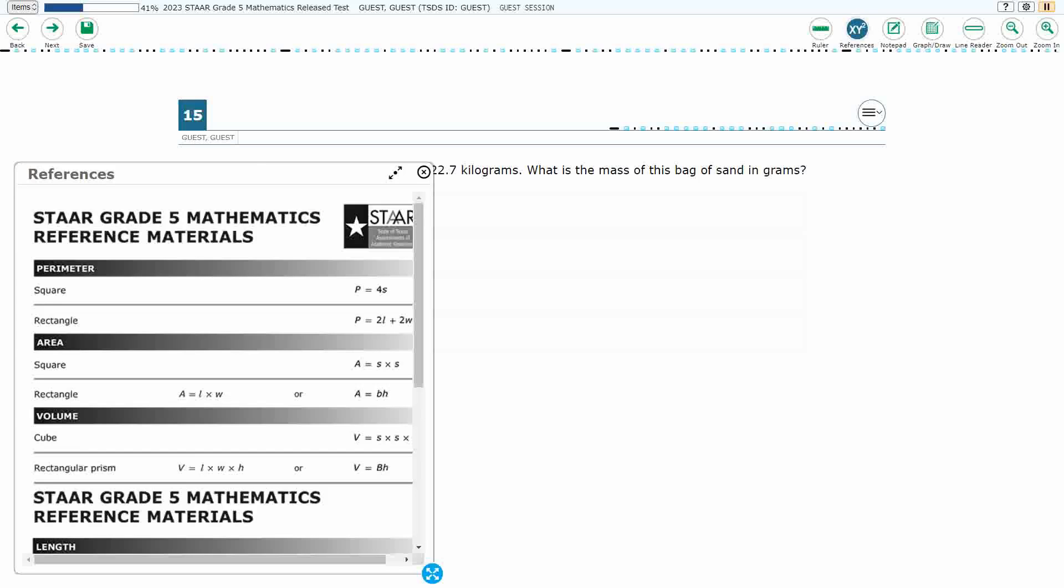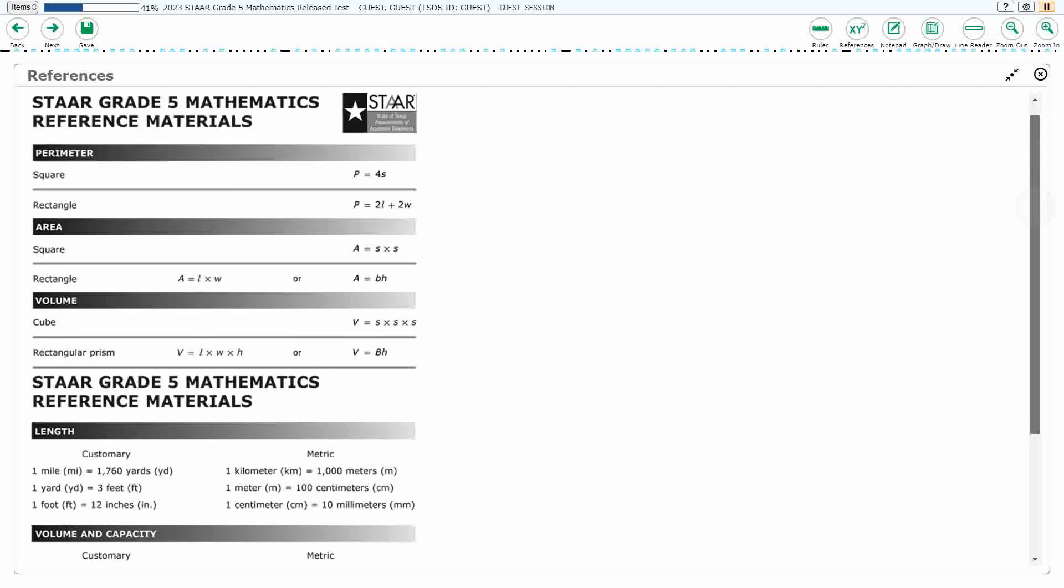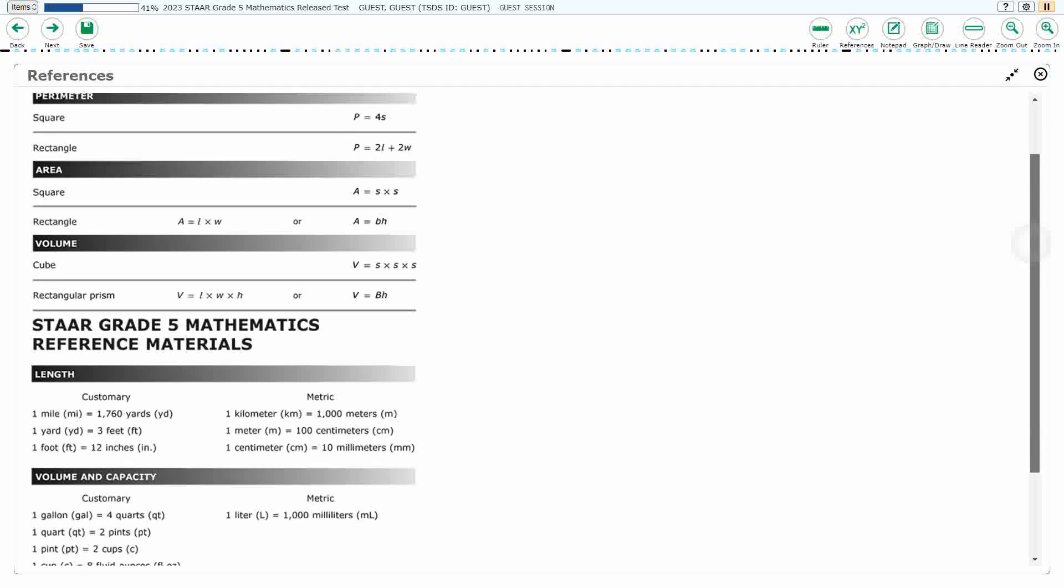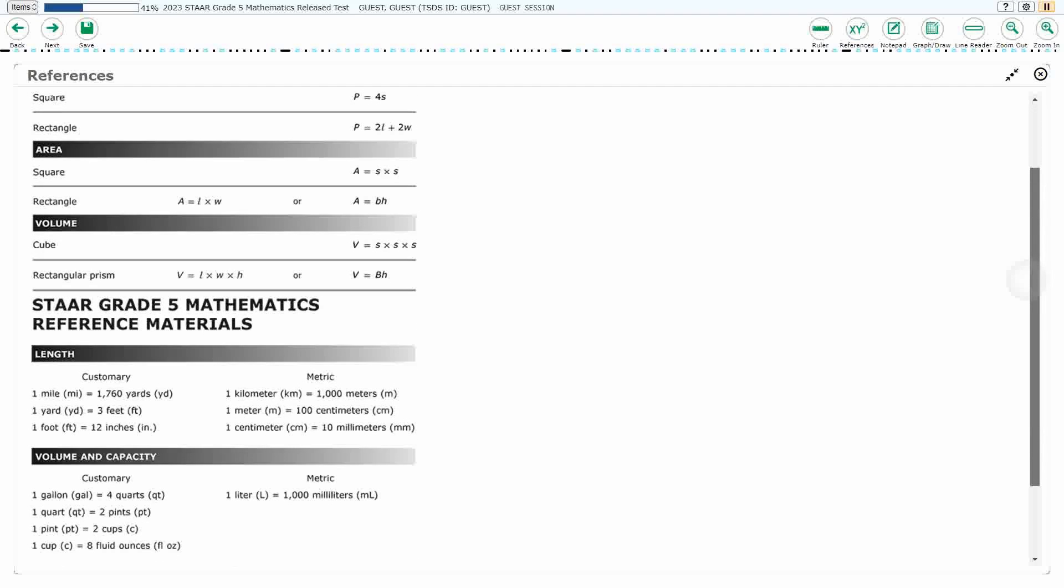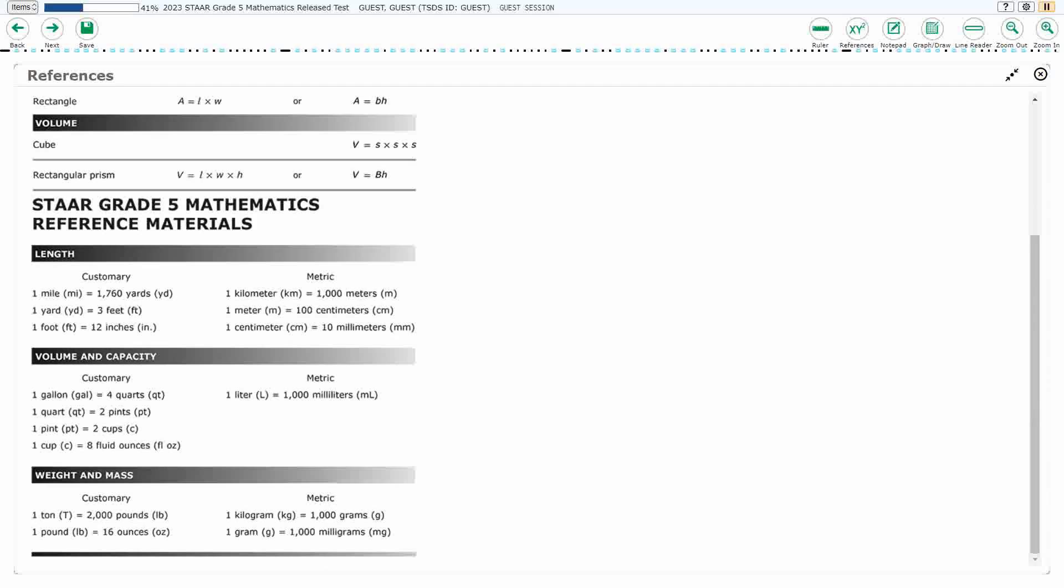We actually have some reference materials we could use here. So if we look at our unit conversion, we are going to look, and we see right down there at the bottom, we've got our weight and mass. The customary system, the U.S. system uses weight, the metric system uses mass. They are not the same thing. They are closely related, but they're not the exact same thing. So the mass is the amount of matter in an object. The weight measures the effect of gravity on that object.